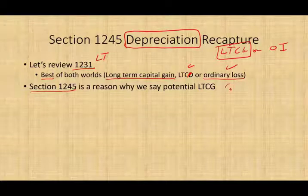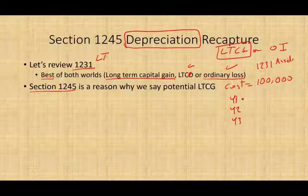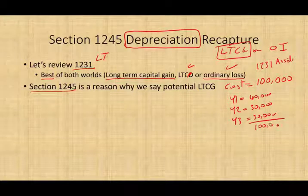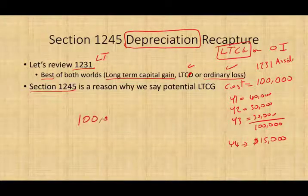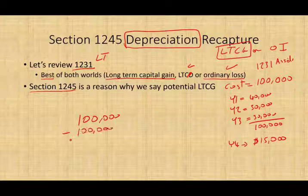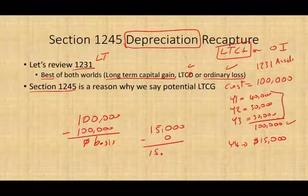Let me work a quick example. Let's assume we bought an asset for $100,000 — a Section 1231 asset, machinery used in a business. We depreciated it over three years: year one $40,000, year two $30,000, year three $30,000, for total depreciation of $100,000. In year four, we sold this asset for $15,000. The cost is $100,000 minus $100,000 of accumulated depreciation, so the basis equals zero. Therefore, $15,000 minus zero equals a gain of $15,000.